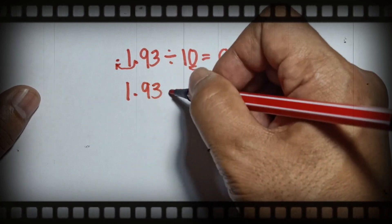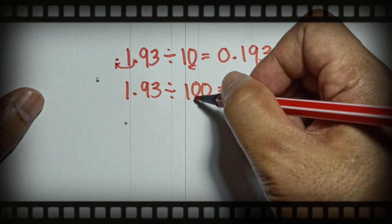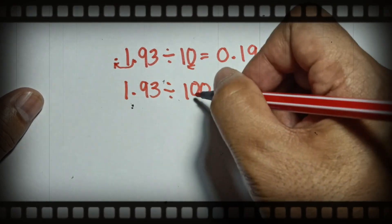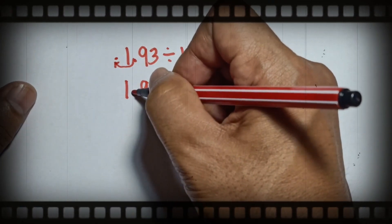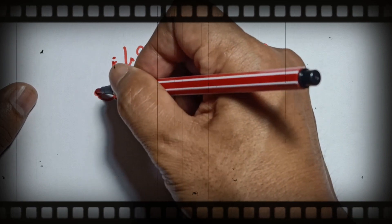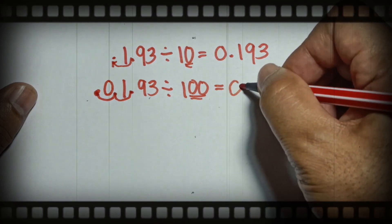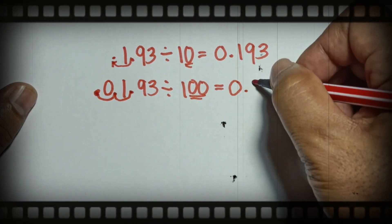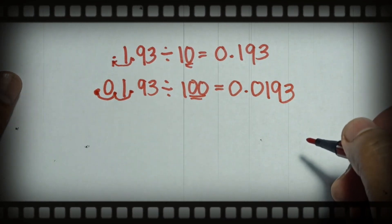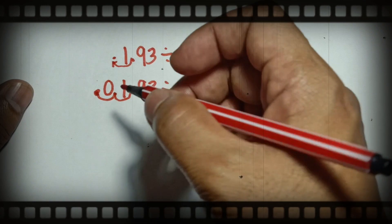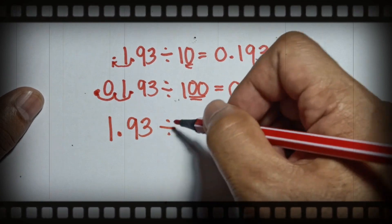While if you are dividing 1.93 by 100, in 100 you have two zeros, so you have to move your point going to the left twice — one and two. Your point will be here, then all you have to do is add a zero in there, so your answer will become 0.0193.